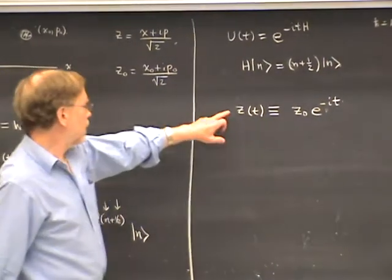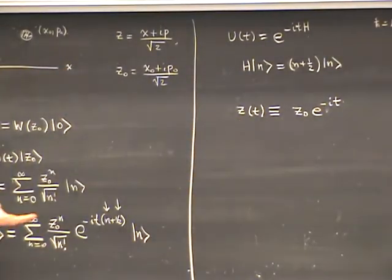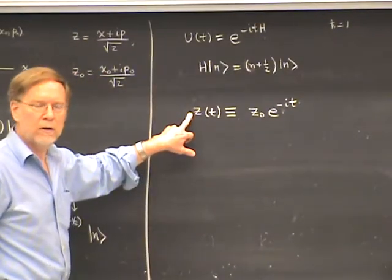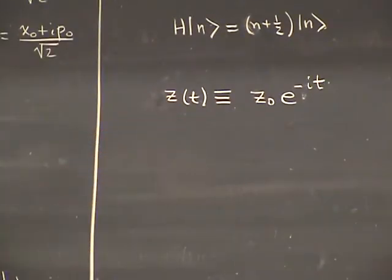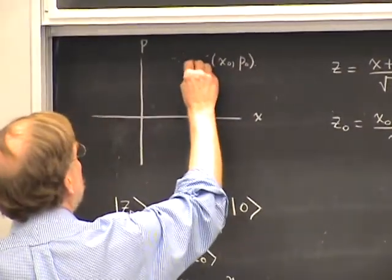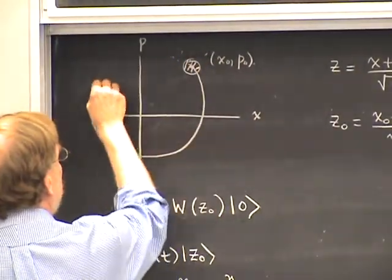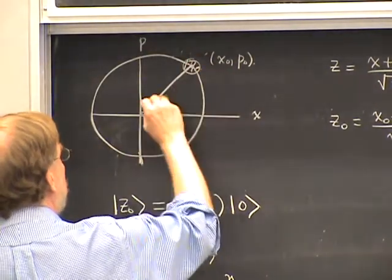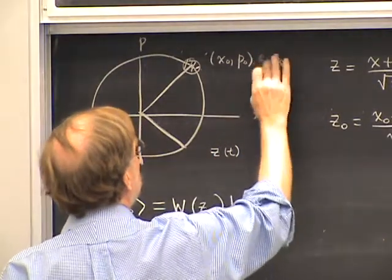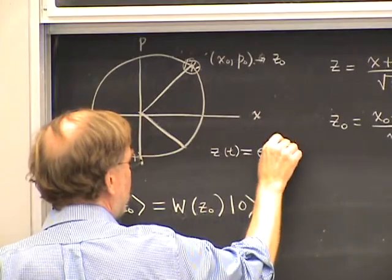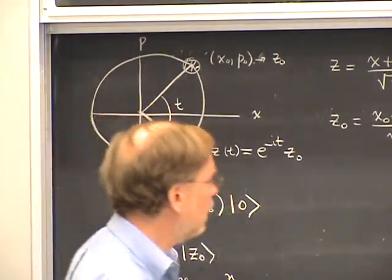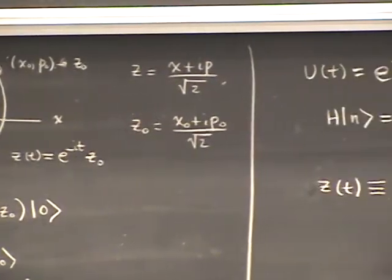Last time I showed that this definition is convenient for the quantum mechanical calculation. I also showed that this is actually the same thing as the classical evolution in phase space in these complex coordinates. If I think of Z₀ as an initial condition, the orbit is a circle. Z(t) equals e to the minus it times Z₀, and t is the angle — a clockwise rotation in the complex plane. So the classical solution is coming out of this quantum problem.